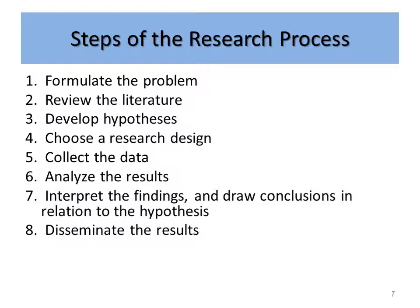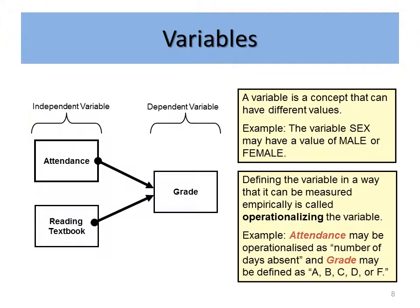Then you would choose a research design. Examples of research designs could be a survey, observation, or existing data that someone else has already collected. You'll choose the research design that most appropriately fits the research problem you're trying to study. Then you'll collect the data using your research design. Once you've collected the data, you'll analyze the results, which usually involves putting the information into a computer and studying it at some length. Finally, you'll interpret the findings, draw conclusions in relation to your hypothesis, and disseminate the results — or share those results with others.